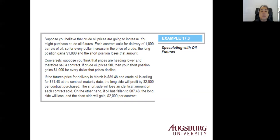For example, if the futures price for delivery in March is $89.48 and crude sells for $91.48 at contract maturity, the long side makes $2,000 (a $2 increase times 1,000 barrels) and the short side loses $2,000. If oil falls to $87.48 — a $2 decrease — the long position loses $2,000 and the short position makes $2,000. That's speculation: you bet on the futures price change.